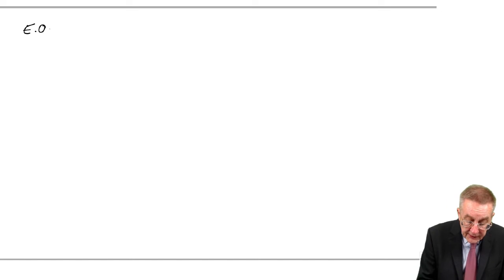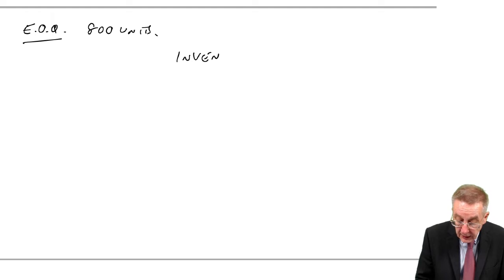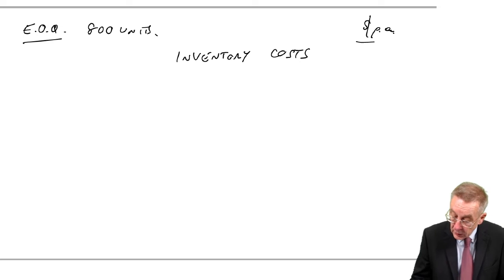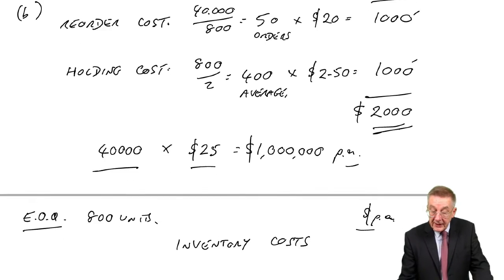First of all, we've already done the EOQ. And we know that at the EOQ of 800 units, we know what the inventory costs will be over the year. I'm not going to show the workings again we've just done. It'll be $2,000.